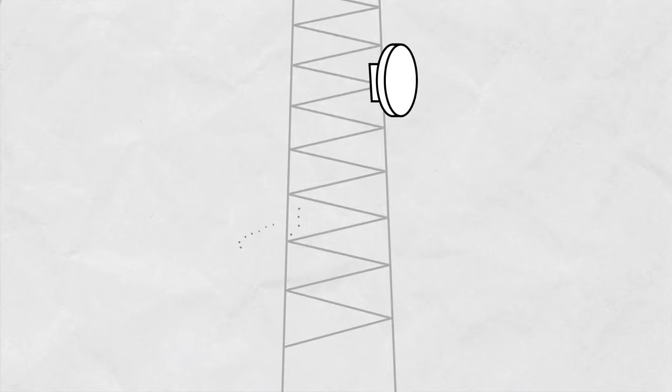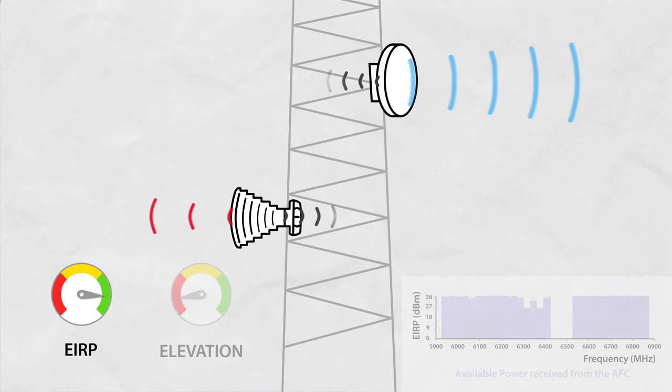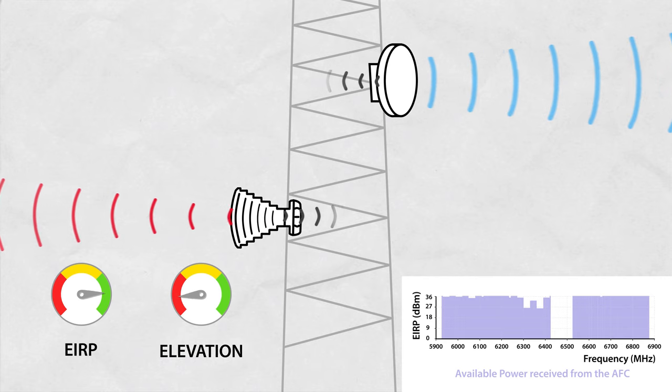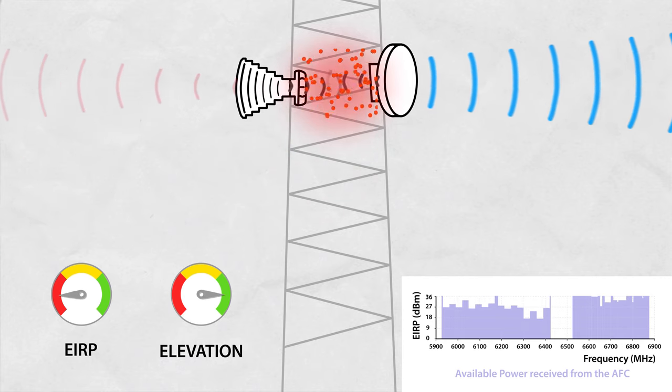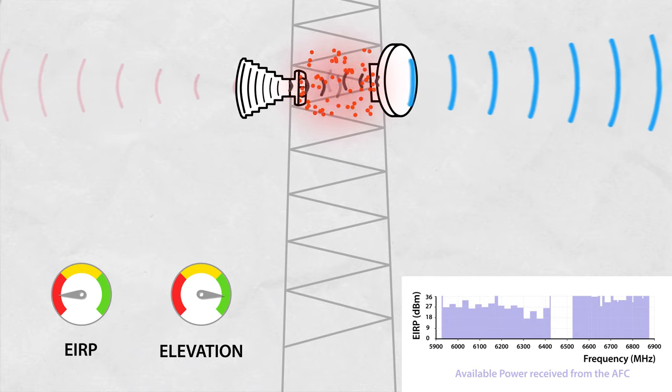The elevation part is really important as the AFC determines how far your signal will go when considering potential interference with incumbent providers. In general, the higher the AP, the higher the potential interference is and the lower your allowed EIRP level might be.